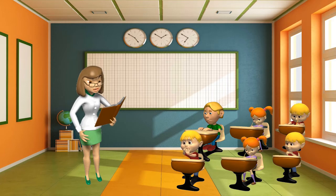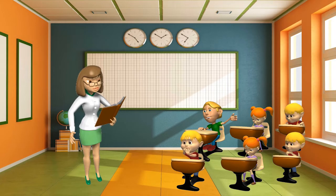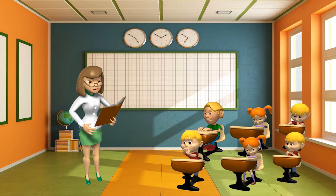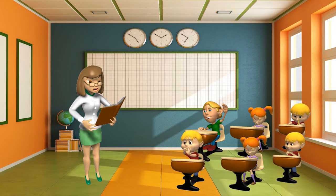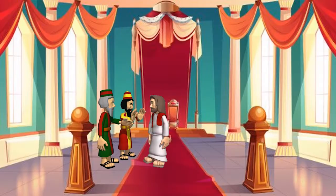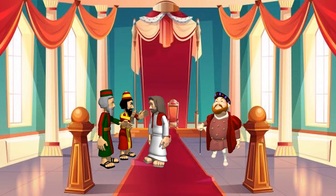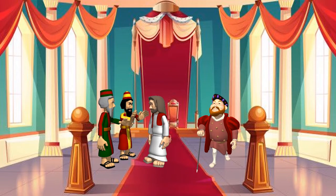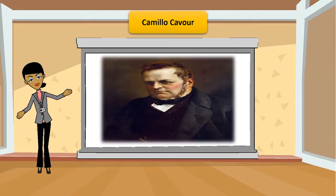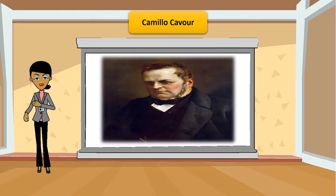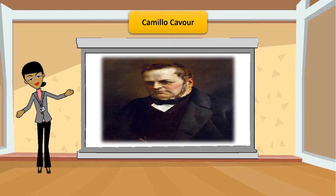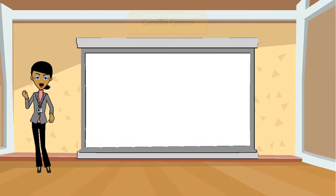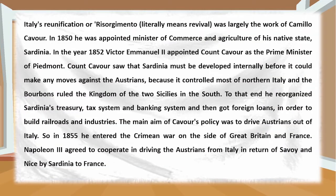Italy's reunification, or Risorgimento — which literally means revival — was largely the work of Camillo Cavour. In 1850 he was appointed Minister of Commerce and Agriculture of his native state Sardinia. In 1852, Victor Emmanuel II appointed Count Cavour as Prime Minister of Piedmont. Count Cavour saw that Sardinia must be developed internally before it could make any moves against the Austrians, who controlled most of northern Italy, while the Bourbons ruled the Kingdom of the Two Sicilies in the south.